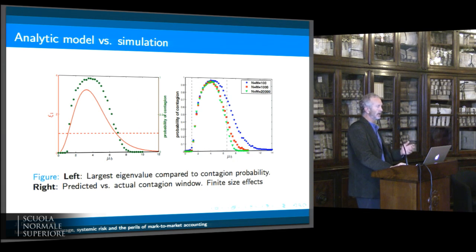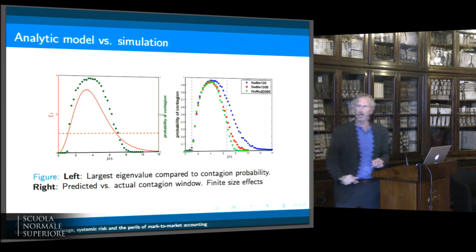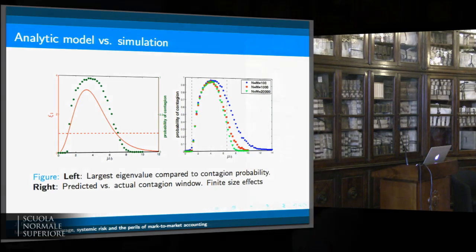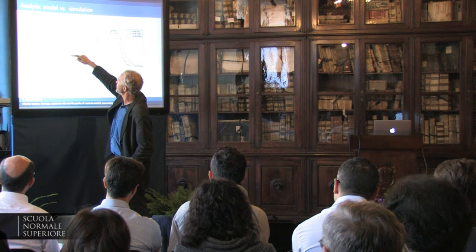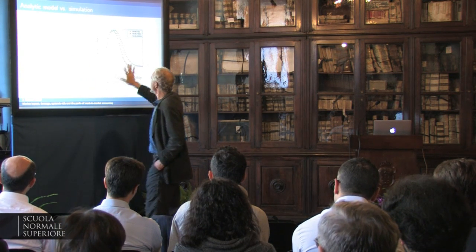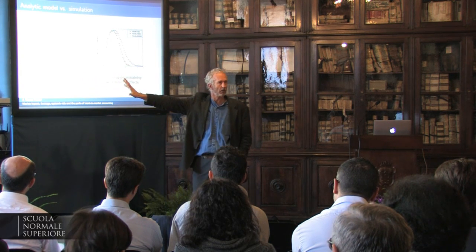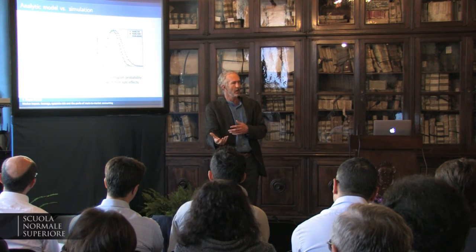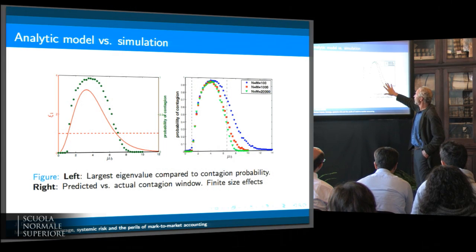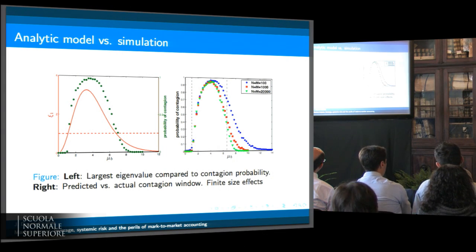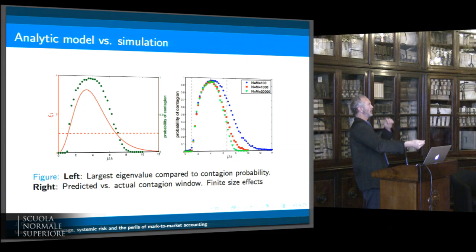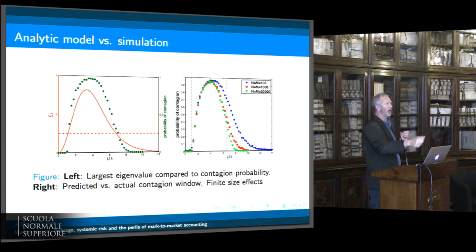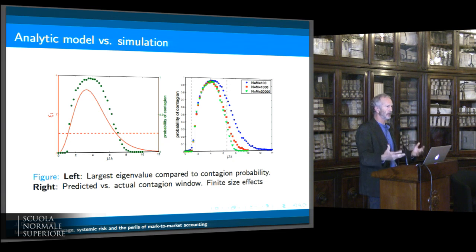We compare the analytic model to brute-force simulation. The analytic model does a very good job of predicting the onset of the instability on the low-diversification side. It undershoots a little on the high-diversification side, for two reasons. One is the finite-size effect — the real world doesn't have an infinite number of assets or institutions. The other is that you have to worry about loops: bank J failing alone may not be sufficient to cause institution I to fail, but if bank J causes bank K to fail, then the combined failure of J and K is sufficient to cause I to fail, and the Galton-Watson approximation doesn't include that.